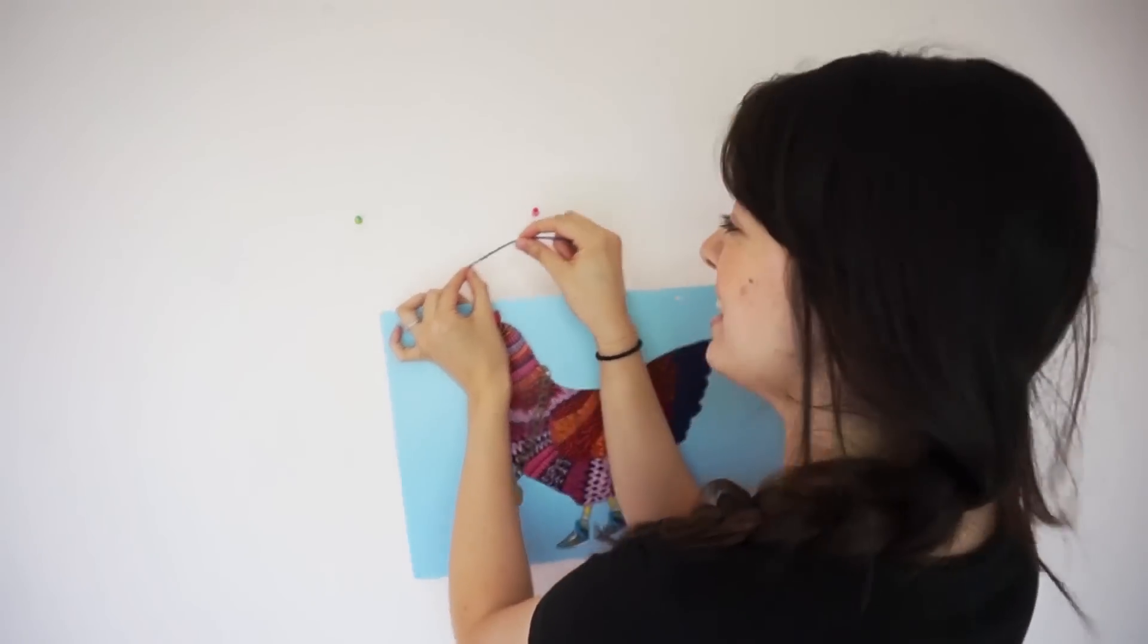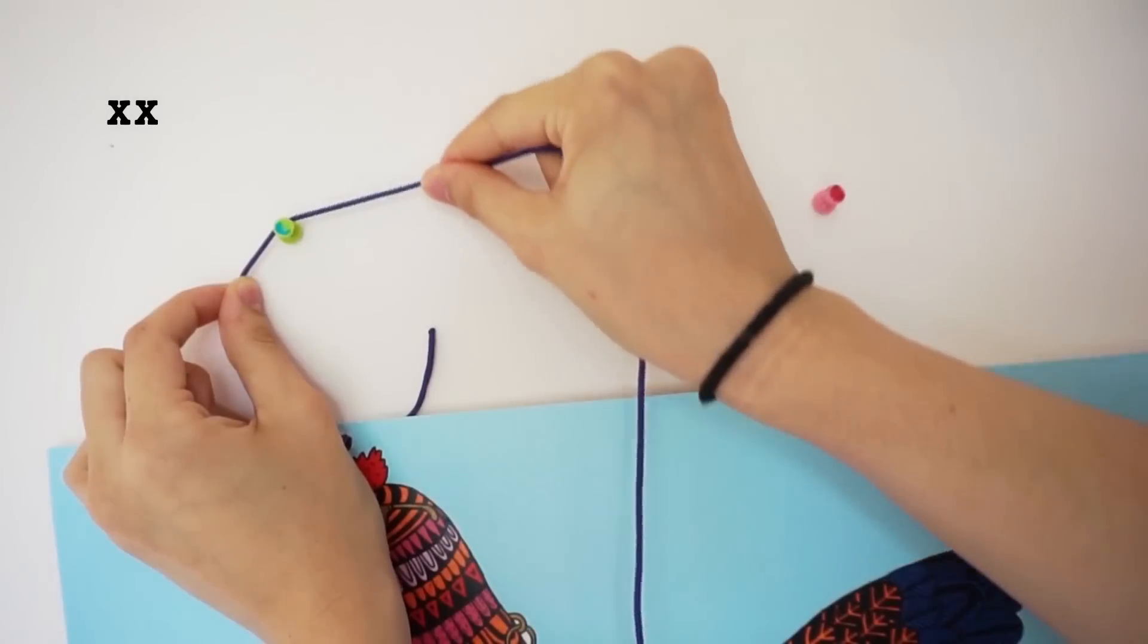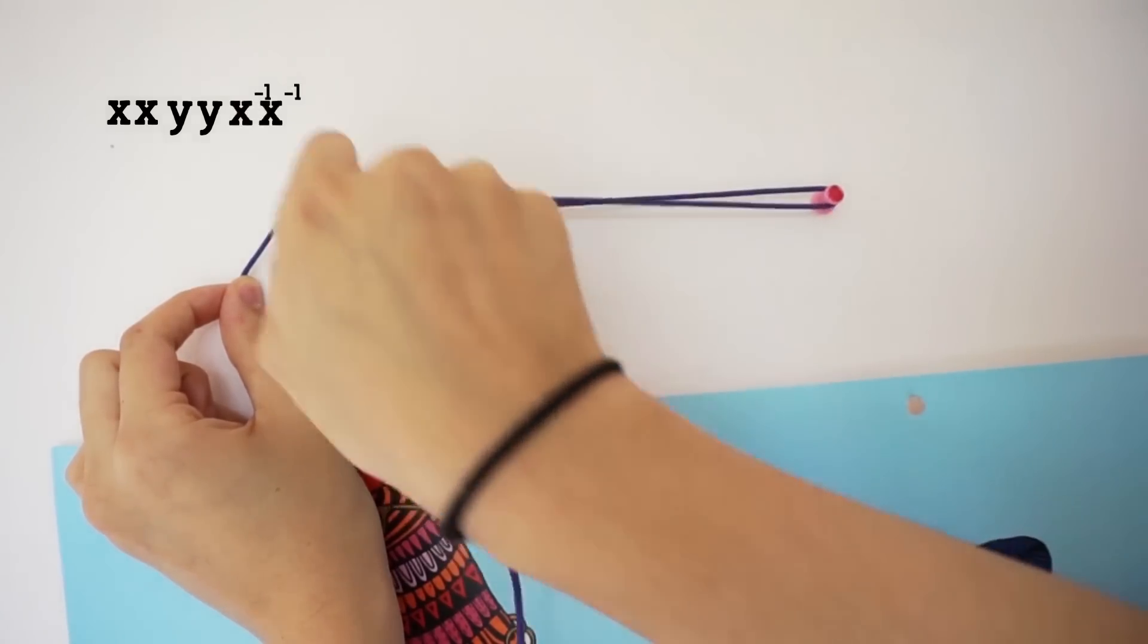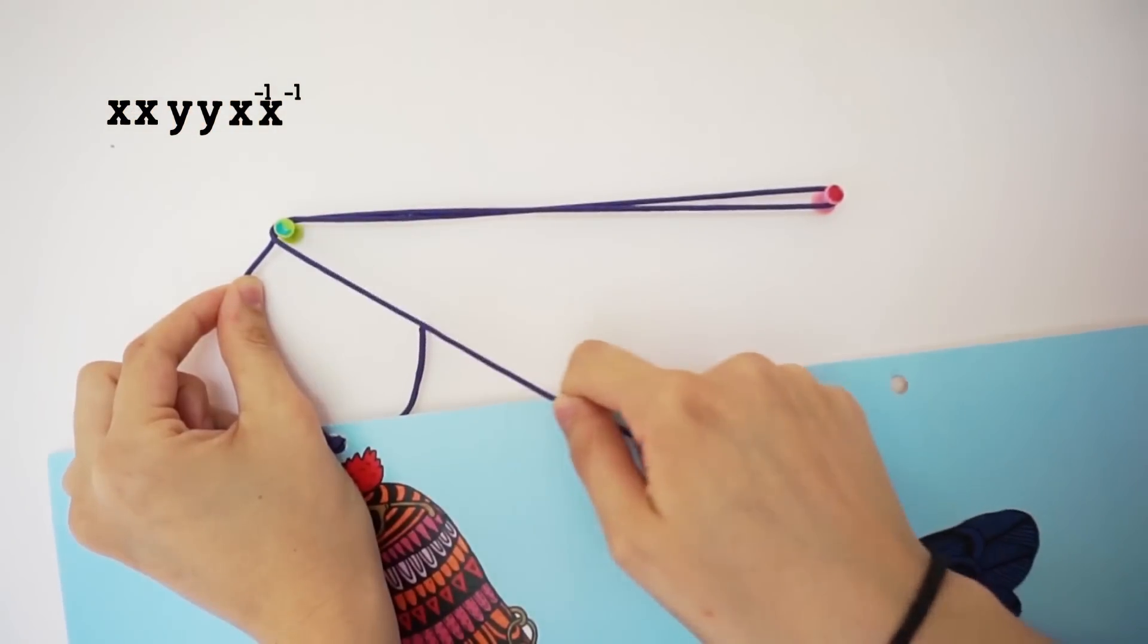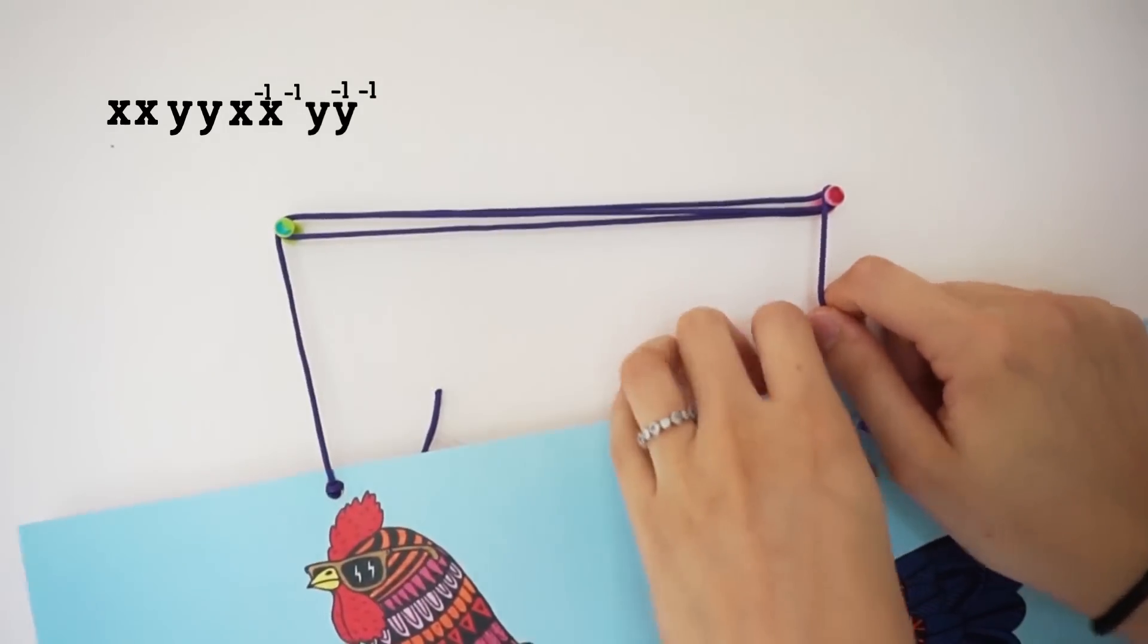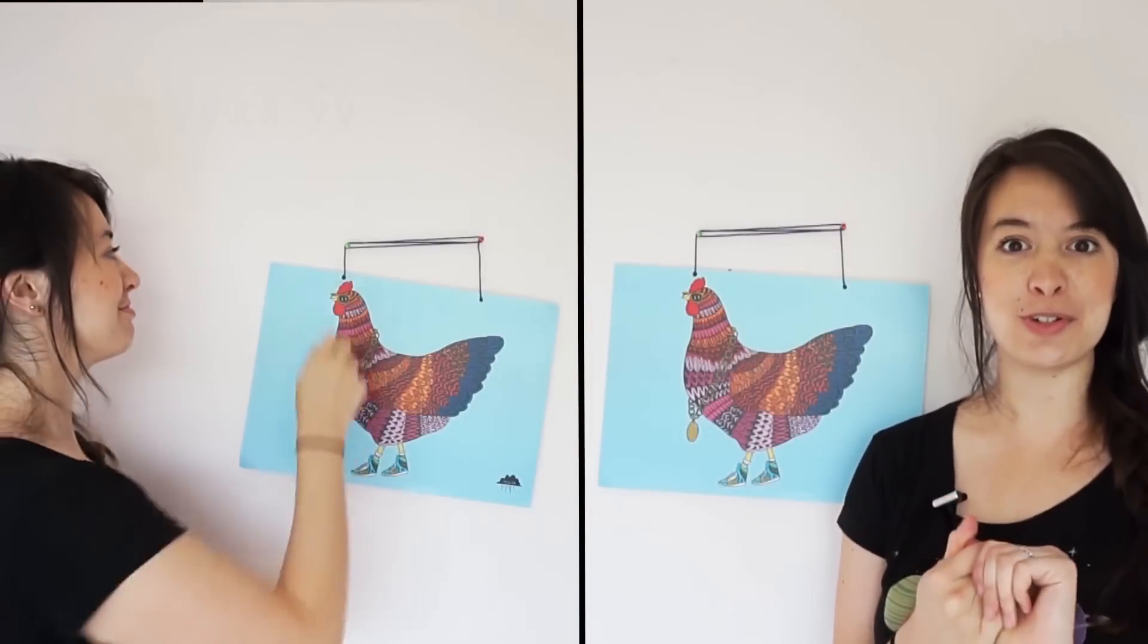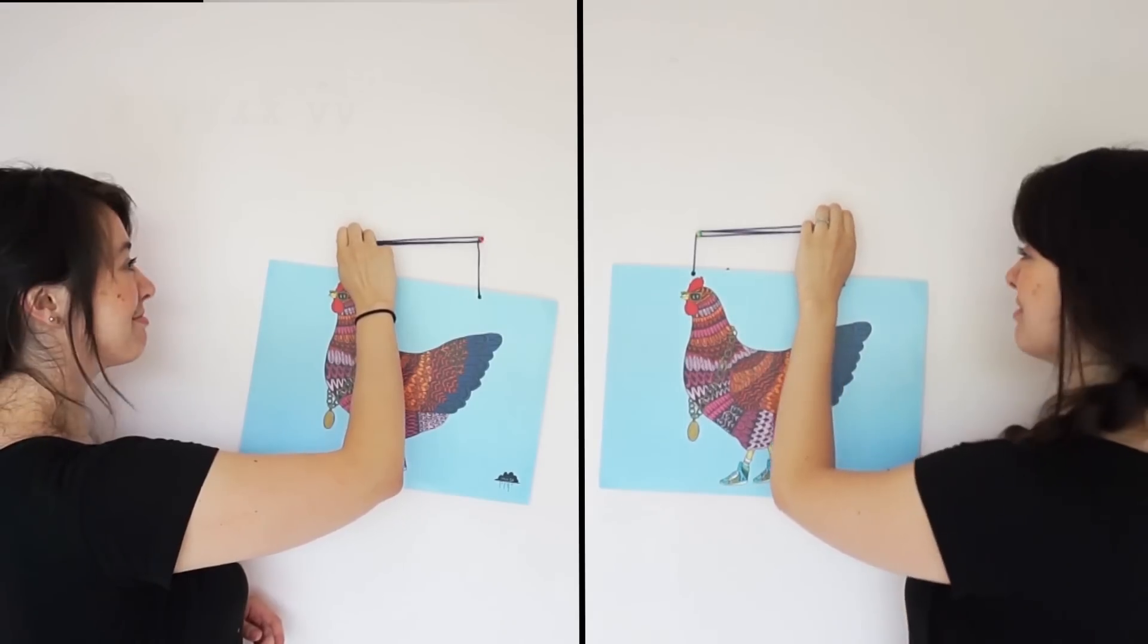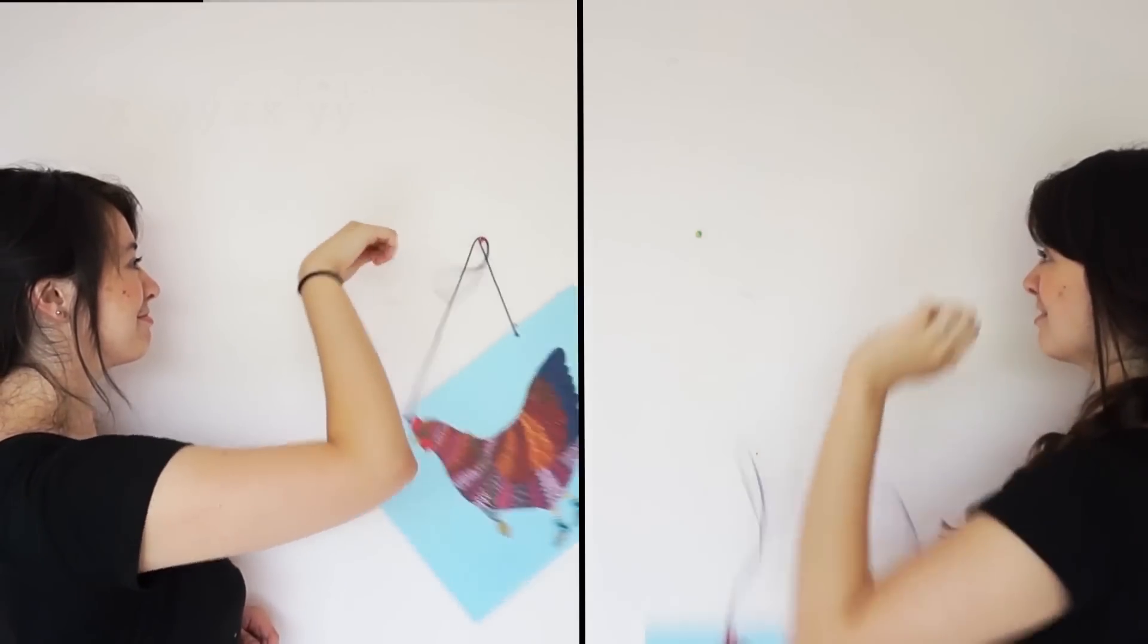So let's do it. Double x, double y, double inverse x, wrapping around counterclockwise, double inverse y. So now the moment of truth. Mathematics.